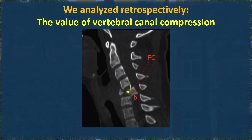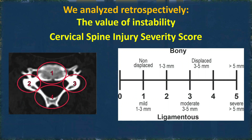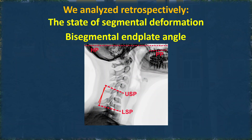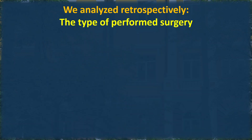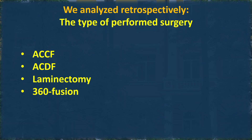We retrospectively analyzed the value of vertebral canal compression using an original method, the value of instability using the Cervical Spine Injury Severity Score, and the state of segmental deformation by determining the segmental endplate angle. The morphologic type of injury was detected using the subaxial spine standard algorithm. All surgeries were divided into four types: anterior cervical corpectomy and fusion (ACCF), anterior cervical discectomy and fusion (ACDF), laminectomy with and without fusion, and 360-degree decompression and fusion surgery.